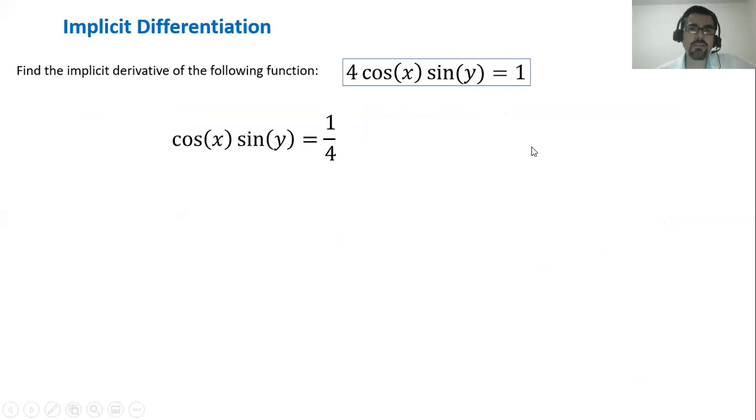First thing that is convenient to do is to divide both sides by four. So we have one fourth on the right hand side of the equation. And then we can take it from here.